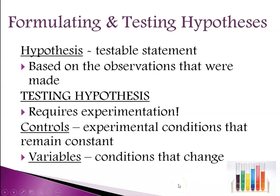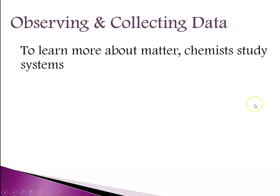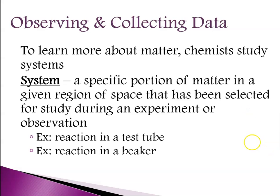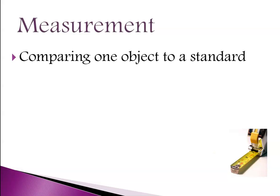There's always some variable that you will change. As we go through doing experiments this year, you'll see that sometimes you have a control and you have a variable. When observing and collecting data, we have to set up some definitions. To learn more about matter, chemists study systems. A system is some specific portion of matter in a given region of space that has been selected to be studied during an experiment or observation — for example, what's happening inside a test tube or beaker. We talk about the system and what surrounds it as the environment. If we're going to do experiments, we're going to be measuring something.